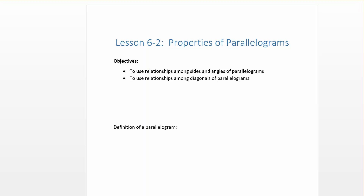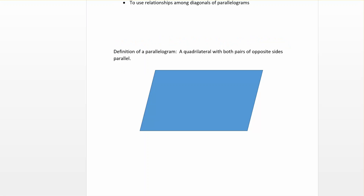Let's start by getting a definition of a parallelogram. A parallelogram is a quadrilateral with both pairs of opposite sides parallel. So we have a parallelogram here — it's a four-sided figure with both pairs of opposite sides being parallel: the top and the bottom are parallel, and the left and right sides are parallel. Nothing about congruent, nothing about supplementary — we'll get to those here in just a second.